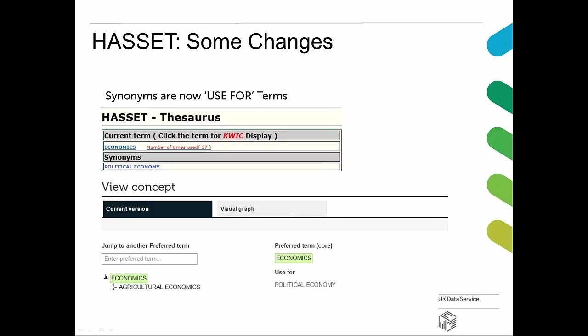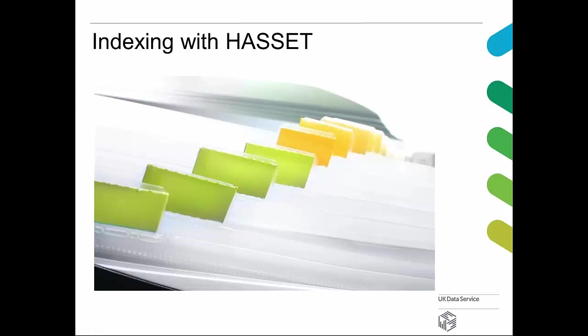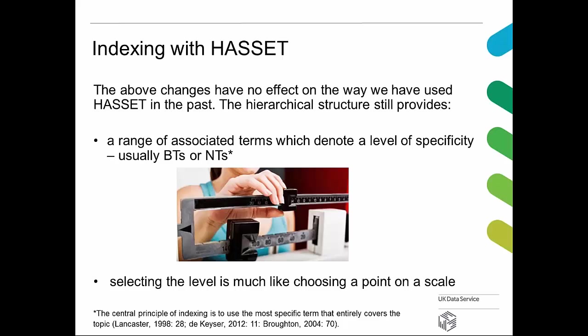You can see the old thesaurus screen had synonyms for economics — political economy. In the current version we have 'used for.' It's a better label, as we've always used the field as if it was a 'used for' field. For example, health and wellbeing terms were never synonyms. Another change is that polyhierarchies are now displayed so that we know exactly where they exist. This is an example of the new technology and innovation hierarchy. The hierarchical structure still provides a range of associated terms which denote a level of specificity, usually broader terms or narrower terms.